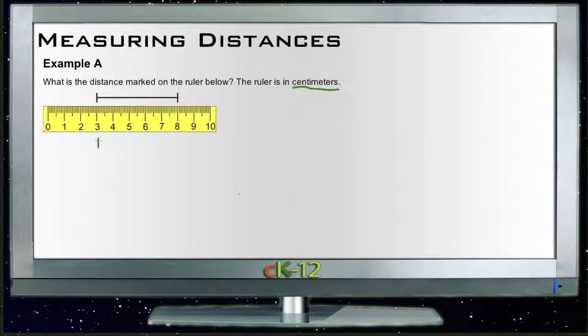The ruler postulate says that if you measure between any two points on a ruler and you want to find the distance, you just need to find the difference between the two marks on the ruler. So we're looking for the absolute value of the difference between three and eight.